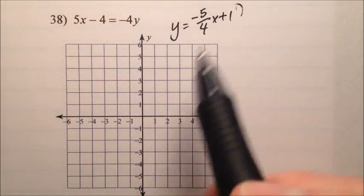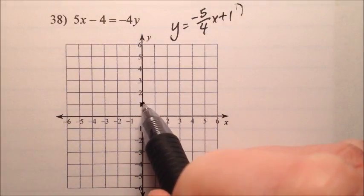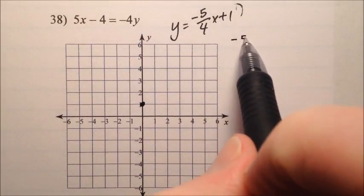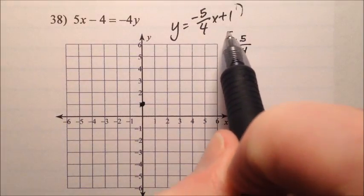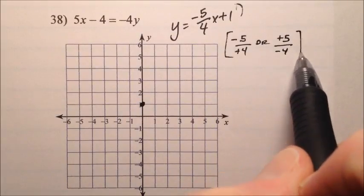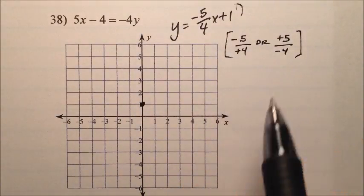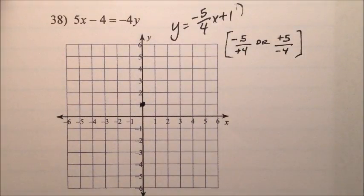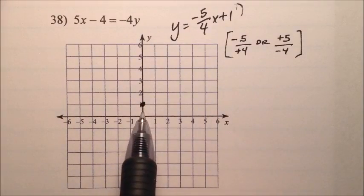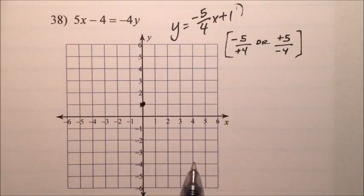I know it'll start at 1 on the y-axis, because that's my y-intercept. And my slope will be a negative 5 fourths. So it'll be a negative 5 over a positive 4. Or it'll be a positive 5 over a negative 4. Because both of these will form and go to a negative 5 fourths. So if we use the first one, negative 5, we'll go down 5 and then over 4. We can only do that once because then we run out of space.